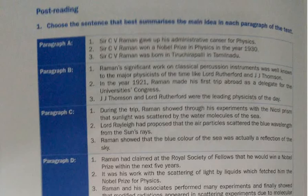Now we go to paragraph B. There are three sentences again — pick the main idea of the paragraph. Read the sentences carefully, go back to the lesson's paragraph B, then answer the question. The answer to this is the second sentence: in the year 1921, Raman made his first trip abroad as a delegate for the university's Congress.